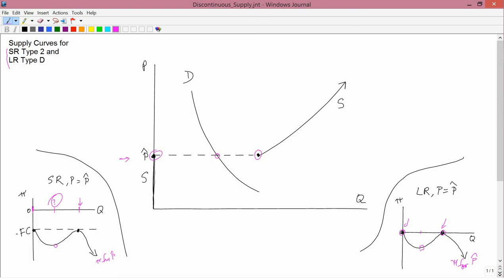How about a price below p-hat? Well, below p-hat quantity supplied is zero, and quantity demanded is certainly not zero. Below p-hat you have quantity supplied here and demand over here, and so you have clearly excess demand, so below p-hat won't work. How about above p-hat? Well, above p-hat supply goes along that curve, and demand goes along this curve, so you have excess supply. So above p-hat you have excess supply.